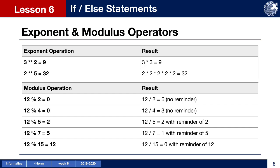In Python programming language, we use the double multiplication sign to calculate the value of one number to the power of another. For example, 3 to the power of 2 is equal to 9 and 2 to the power of 5 is equal to 32.